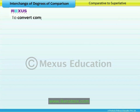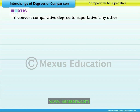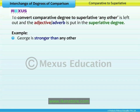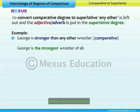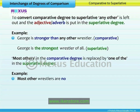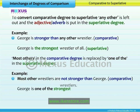To convert comparative degree to superlative, 'any other' is left out and the adjective or adverb is put in the superlative degree. For example: George is stronger than any other wrestler becomes George is the strongest wrestler of all. 'Most others' in the comparative degree is replaced by 'one of the' in the superlative degree. For example: Most other wrestlers are not stronger than George becomes George is one of the strongest wrestlers.